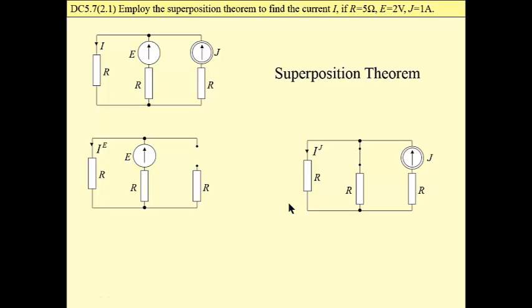Now, same problem, but a superposition theorem approach. We have to split our circuit into as many sub-circuits as we have independent sources in our circuit. So this is a sub-circuit with a voltage source, and this is sub-circuit with a current source.